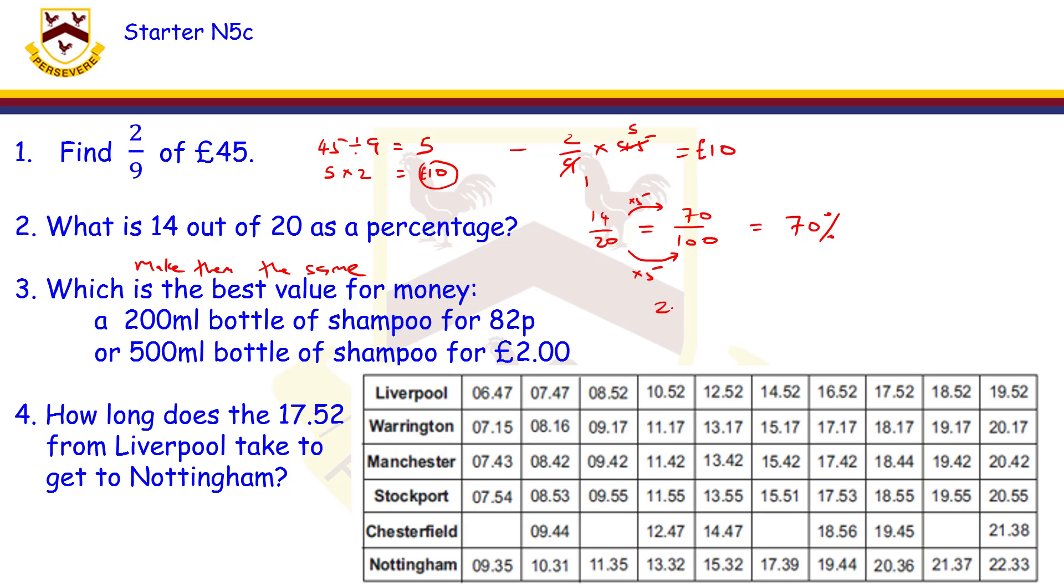To make 100 ml I've got to divide by 2. So if we say 200 ml costs 82p, then 100 ml is going to cost half of that because we divide by 2, and that's going to cost 41p.